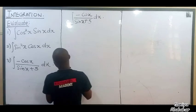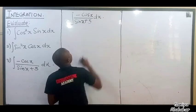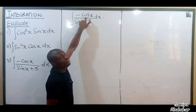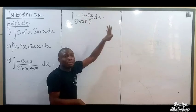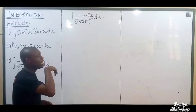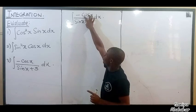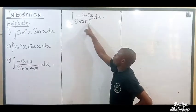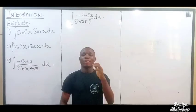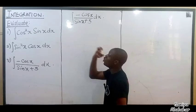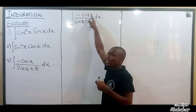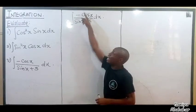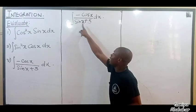Of course, if I make u equal to cos x, then du/dx would be minus sin x. But minus sin x cannot cancel out sin x plus 5 in the denominator. So I cannot use cos x as u. Hence, the value I use for u is sin x plus 5.